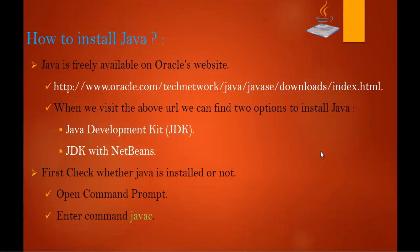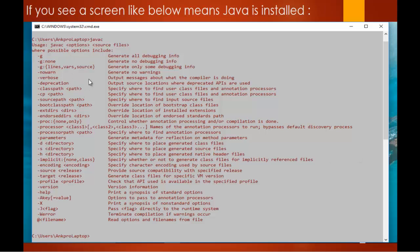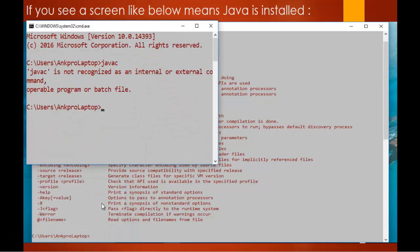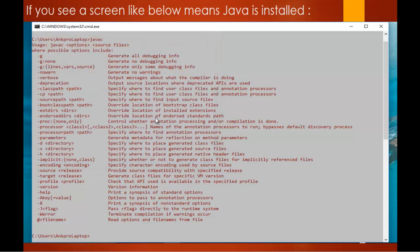This means Java is not installed on the machine right now. If it were installed, it would return a list of options — you can observe from this image that when Java is already installed and you type 'javac' it gives you a list of options. Right now it threw an error saying 'javac is not recognized', meaning Java is not installed on my machine.